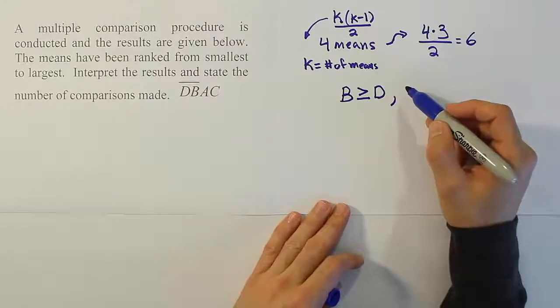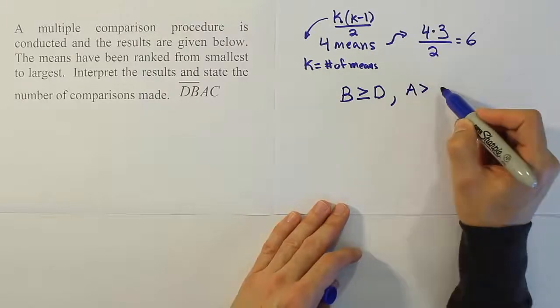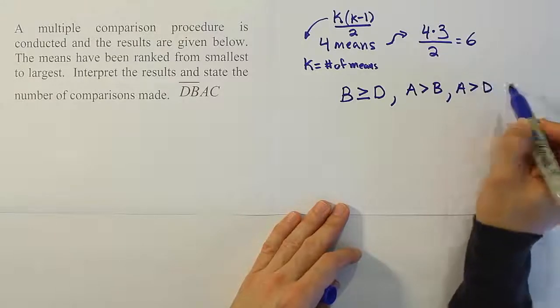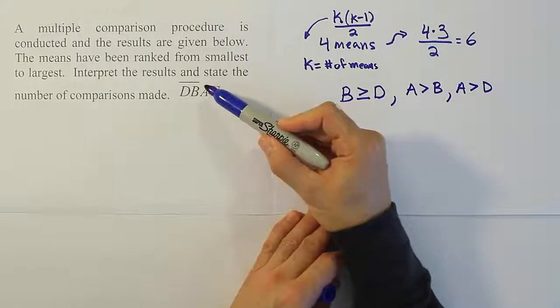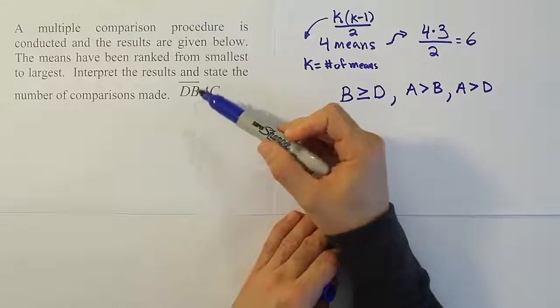So we can certainly say that A is greater than B and A is greater than D. We can say this because A is not joined to B and D by a bar. It's to the right of them, so it means it's bigger than both of them.